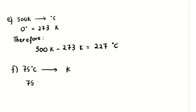For the last question, convert 75 degrees Celsius back to Kelvin. Add 273 Kelvin: 75 + 273 = 348 Kelvin. That's all for the first tutorial — see you in my next tutorial video!